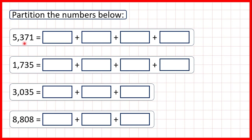So first, we have 5,371. This 5 is in our thousands place, so that represents 5,000. That's 5 followed by 3 zeros, because notice in our number, after the 5, we have 3 digits.